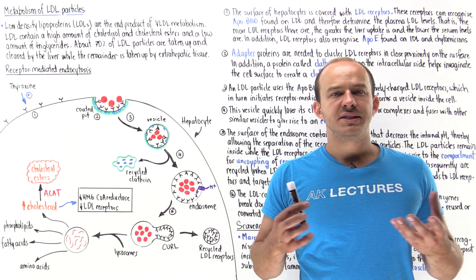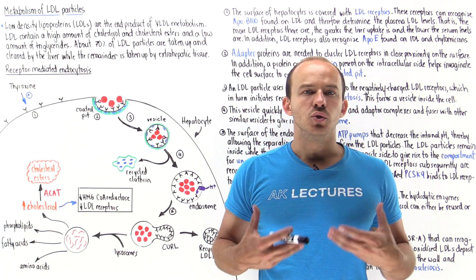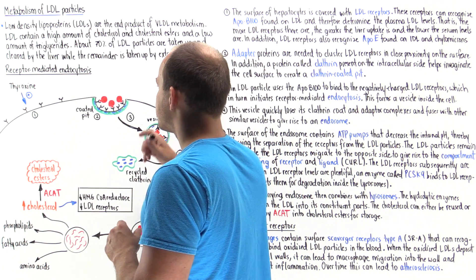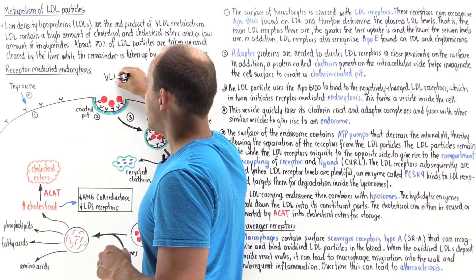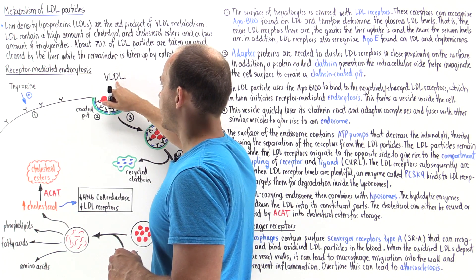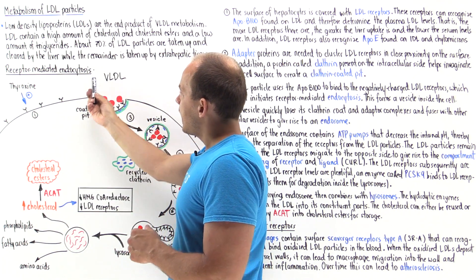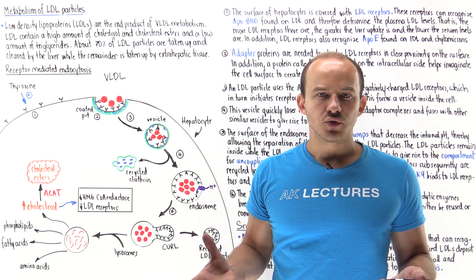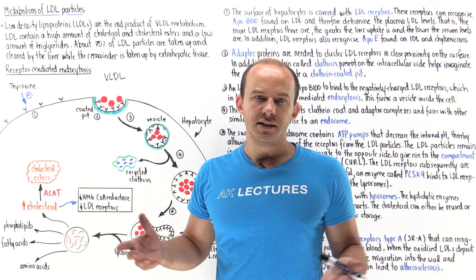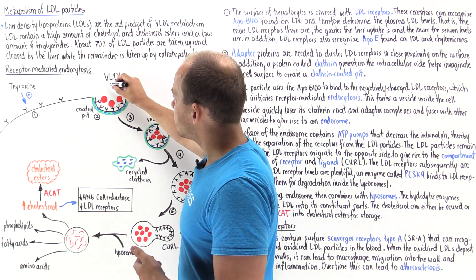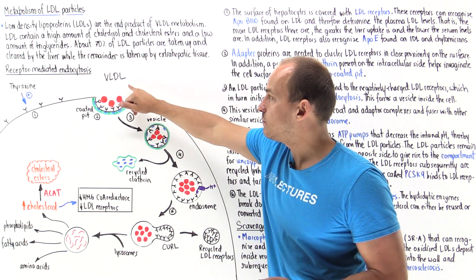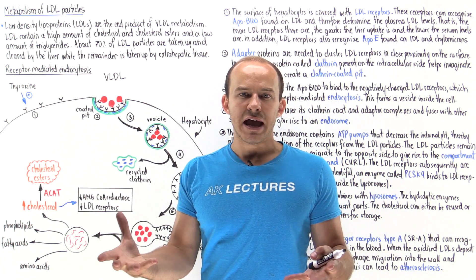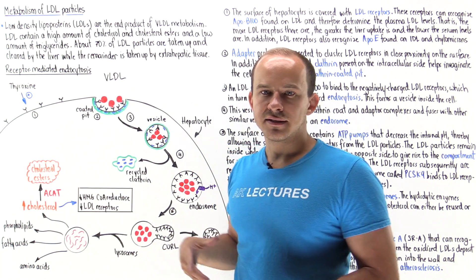In this lecture, we're going to focus on the metabolism of LDL particles, so low-density lipoproteins. Inside our liver cells, we produce VLDL particles, very low-density lipoproteins. They contain a very high amount of triglycerides, and they also contain some cholesterol and cholesterol esters and proteins and phospholipids. The point of building these VLDL particles is to move triglycerides and other fats to other extra-hepatic cells of the body.